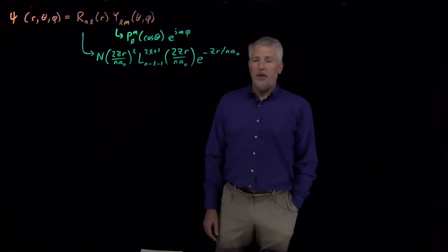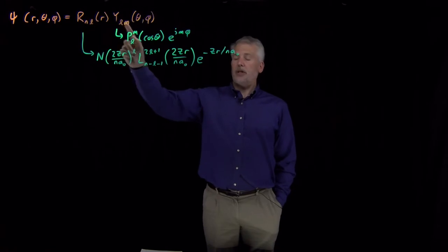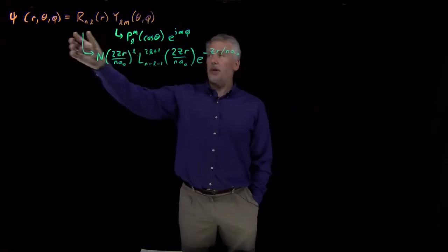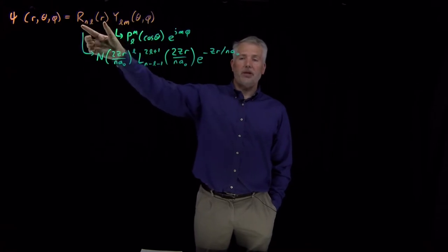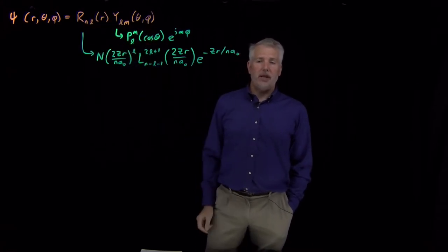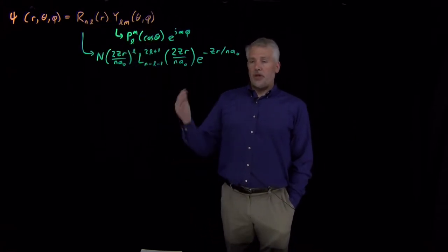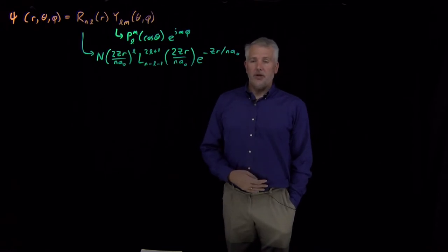So what we've managed to do so far is, after separating the variables, after deciding that our wave function might be a product of a radial piece and an angular piece—one that depends on only r, one that depends on theta and phi—we discovered that that does indeed solve the Schrödinger equation.